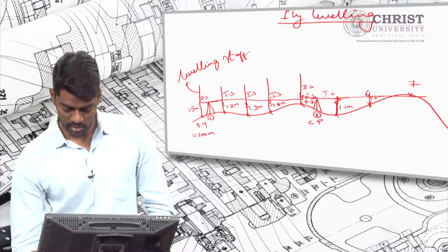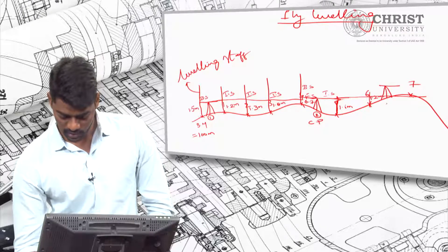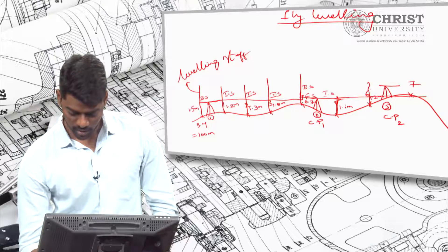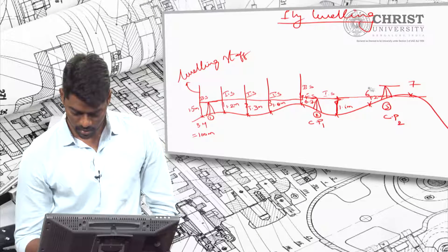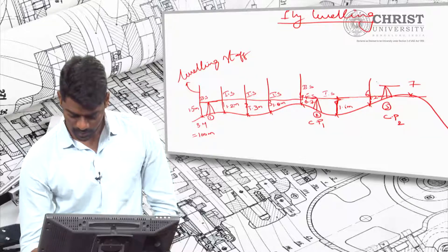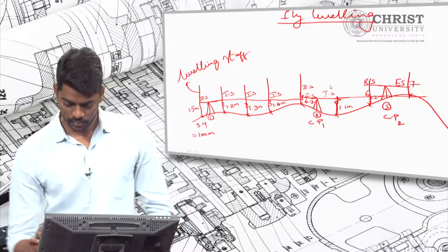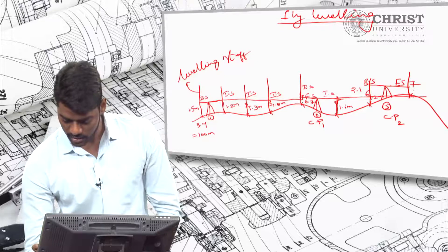I am shifting the instrument from station 2 to station 3. This is change point 1 and change point 2 respectively. At station 3, we keep our leveling staff, take a backsight as well as a foresight. I am considering the backsight as 2.1 meters and the foresight on 0.7 as 0.8 meters.